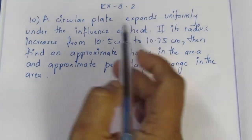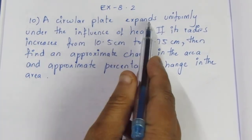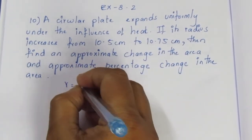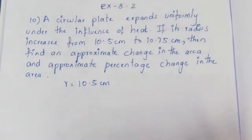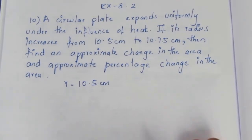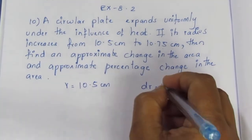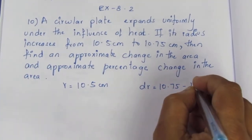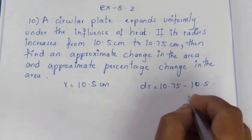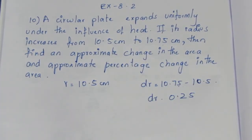A circular plate expands uniformly under the influence of heat. If its radius increases from 5 cm to 10.75 cm — the actual radius plus the increase — then the change in radius dr is 10.75 minus the original, which gives 0.25. So the change in the radius is 0.25.